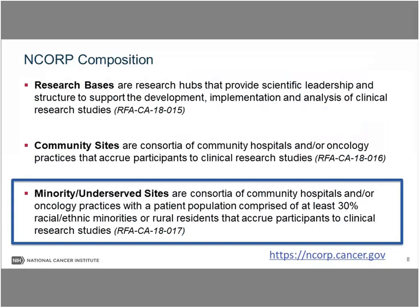The Minority Underserved Sites are a consortium of community hospitals or oncology practices with a patient population comprising at least 30% racial and ethnic populations or rural residents. There are three components to our program: research bases that provide scientific leadership and structure to support community sites; community sites that do not need to meet the population-specific requirement; and the Minority Underserved Sites. I strongly encourage you to review these components to understand how they integrate and work collaboratively as a community and academic partnership.